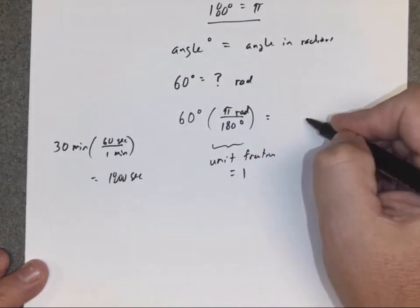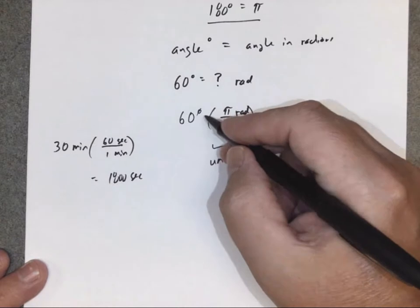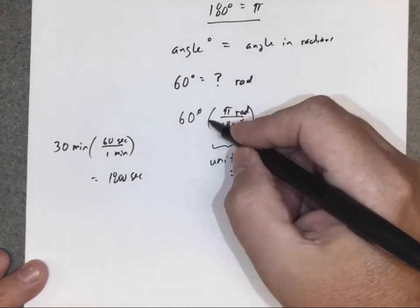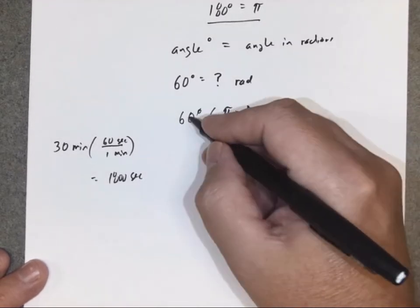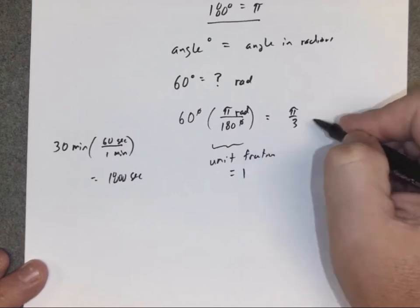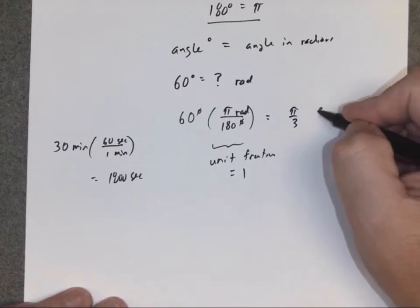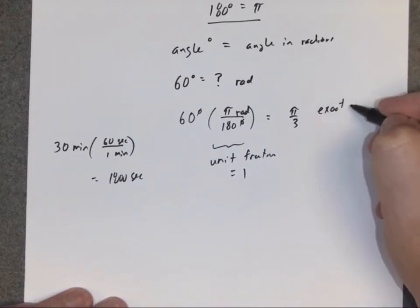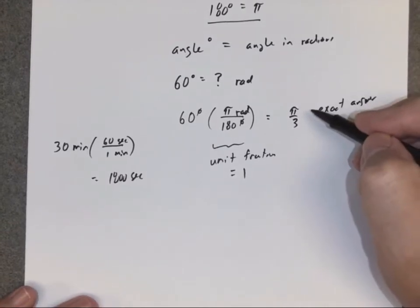So the units are going to be radians. I'm not going to write radians here now. I wrote it here just so it's obvious, but the degrees cancel out. I'm left with radians. 60 over 180 is one third. What you end up with is π over 3 radians. And by the way, this is called, you're going to see this in this class, an exact answer.